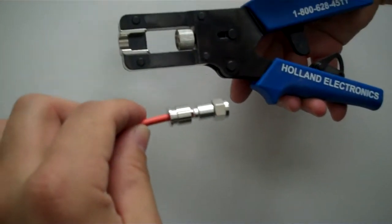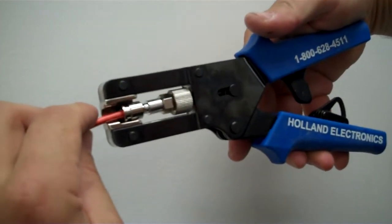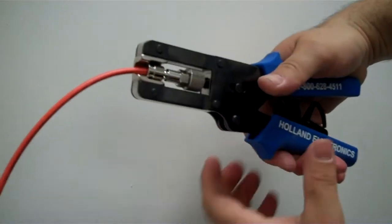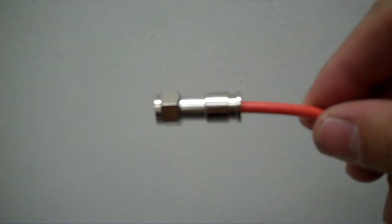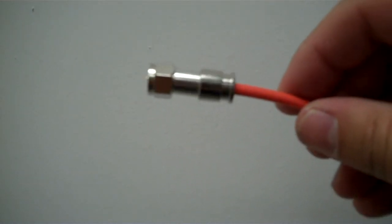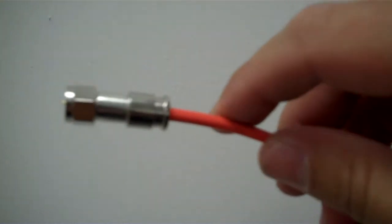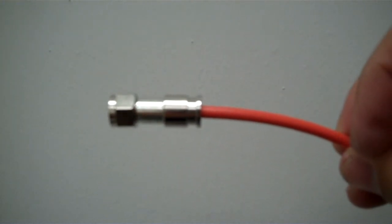We take our compression tool. This one happens to be a universal compression connector for BNC, RCA, and F tools. And there you have it, a well compressed mini coaxial compression connector onto your mini coax cable.